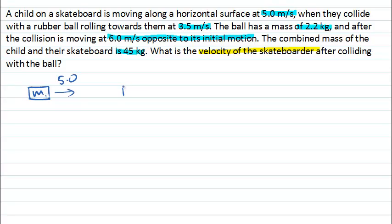Moving in the opposite direction towards the skateboarder is a ball, let's call that M2, and it's moving with a speed of 3.5 metres per second in the opposite direction. At some point a collision occurs.